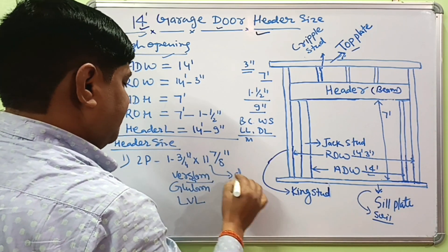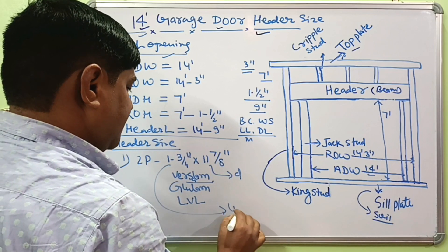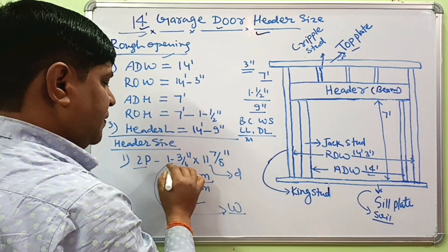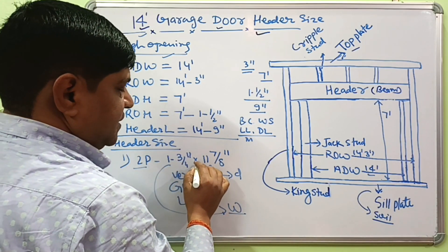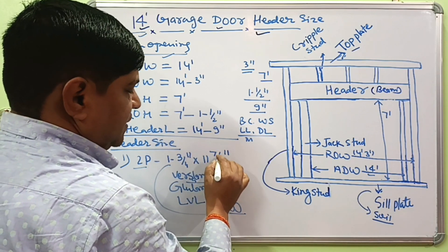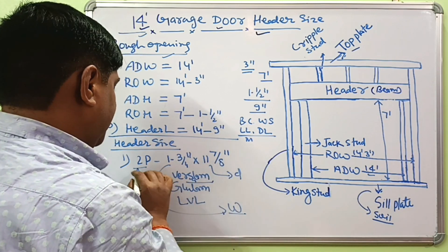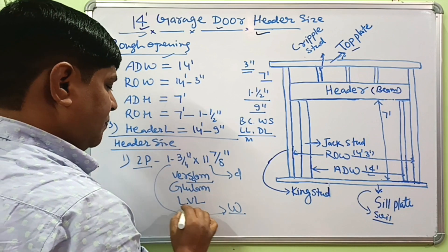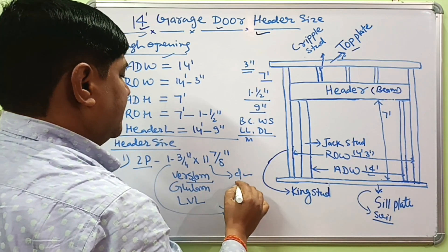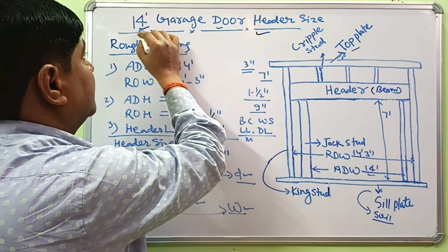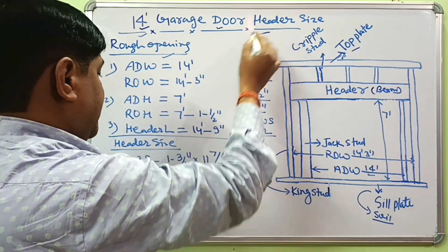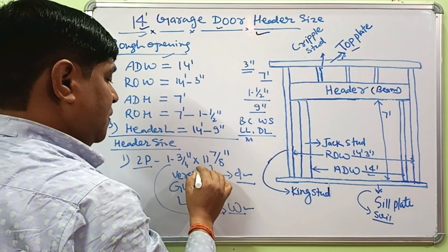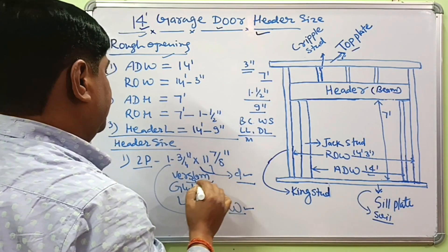This one is the depth and this one is the width. Two pieces of 1 and 3/4 inches by 11 and 7/8 inches are laminated together to form this width and depth. If your garage door is 14 feet, this will be the correct header size. You can use two pieces laminated together. Thank you.